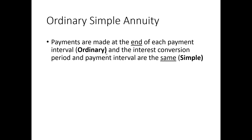An ordinary simple annuity — which is what we'll primarily focus on — means payments are made at the end of every payment interval, hence 'ordinary.' And the interest conversion period and the payment interval are the same, hence 'simple.' We will relax the simple part later. For now, we keep them the same just to get a sense for how everything works before making it too complicated.